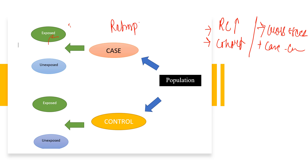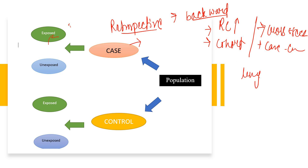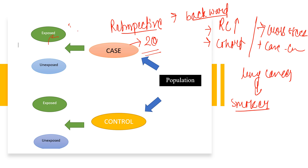The case-control study is a kind of retrospective study. Retrospective means we are looking backward. For example, if we are going to find the association between lung cancer and smoking, we first find which persons have the disease. Suppose we find the total number of lung cancer patients is 20.